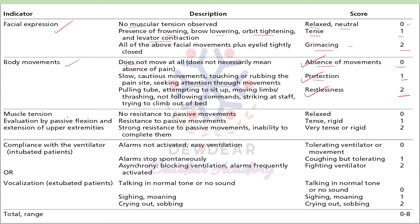The third indicator is muscle tension, evaluated by passive flexion and extension of upper extremities. If there is no resistance to passive movements, the patient looks relaxed — score is 0. If there is resistance, the patient is tense and rigid — score is 1. If there is strong resistance to passive movements with inability to complete them, the patient is very tense or rigid — score is 2.